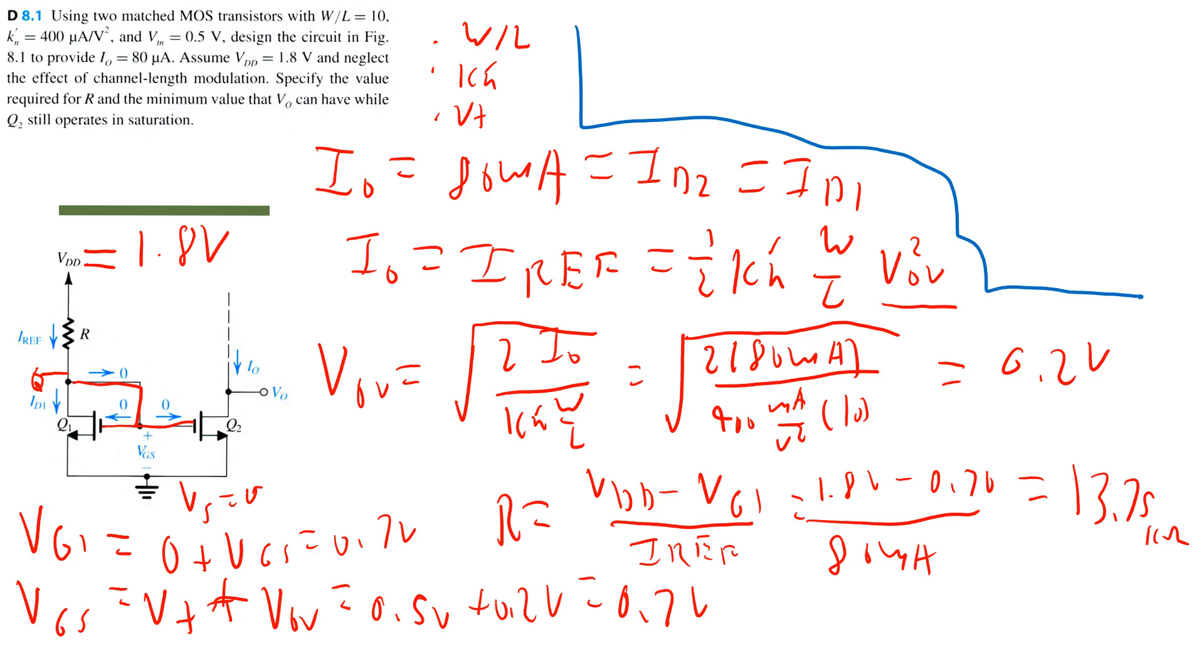Let me highlight this. So we know that Vout is the voltage at the drain of Q2. And we know that for a transistor to operate in saturation, the minimum voltage from drain to source is equal to V overdrive. And again, because the voltage at the source is 0,